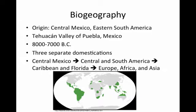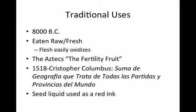The avocado spread from Central Mexico to Central and South America, and then, with the arrival of the conquistadors from Europe, it was brought by them to the Caribbean and Florida, and then on to the rest of the world. The avocado is now grown throughout the world, but still mainly in Central and South America.